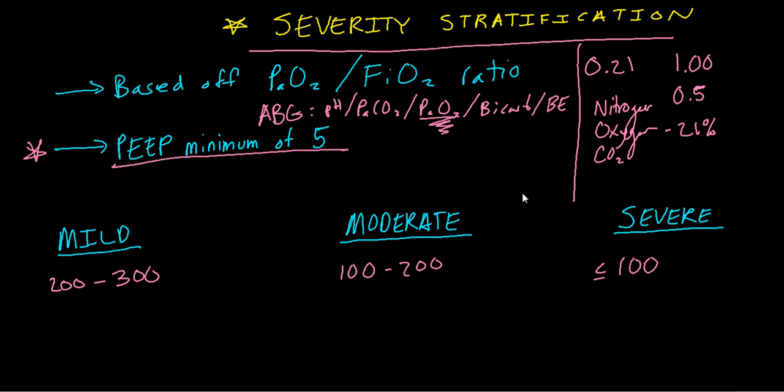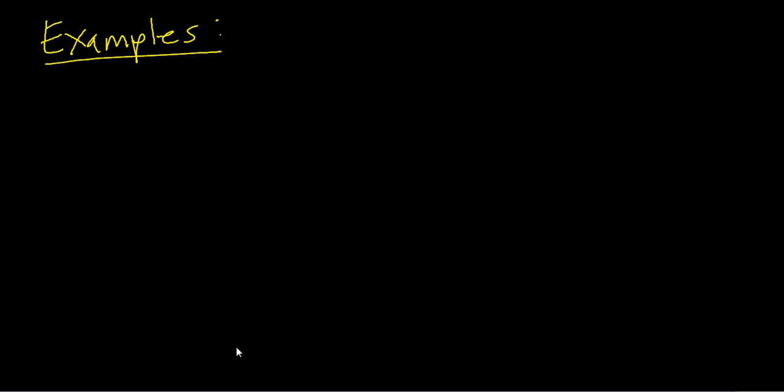As you become progressively worse, so as you go from mild to moderate to severe, your chance of mortality increases. So if you have severe ARDS, the mortality rate, the risk of dying, is actually fairly high. While if you have mild ARDS, you still do have a good risk of mortality of dying. However, your risk is a lot less than if you were classified as severe. So let's do some examples.